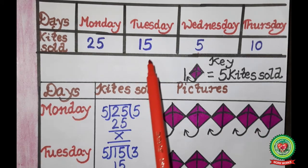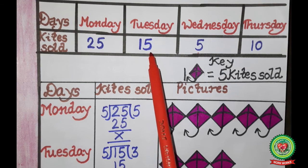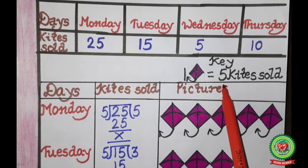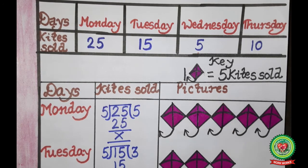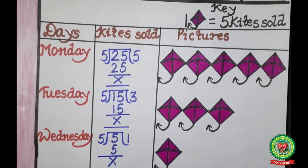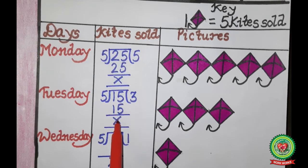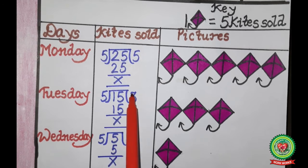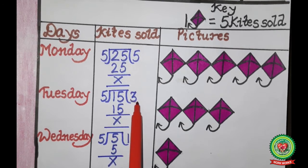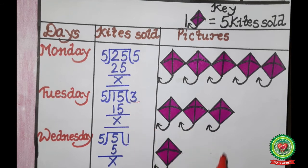The next number is 15. Divide 15 by the key, which is 5. On the 5 times table, 15 comes at 3 — so 3 fives are 15, remainder 0. The quotient is 3, so we draw 3 kite pictures for Tuesday.